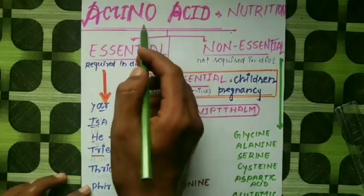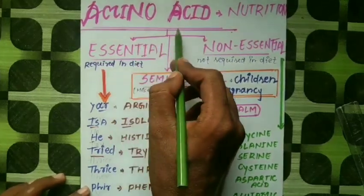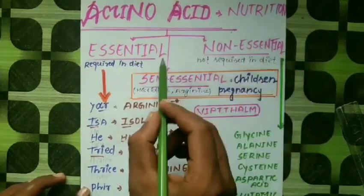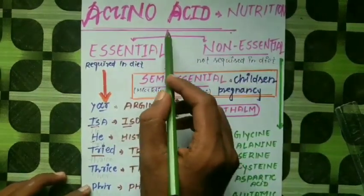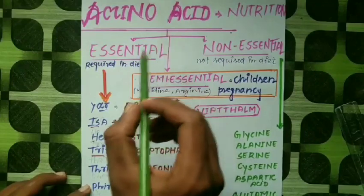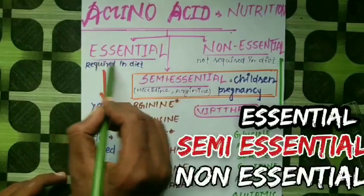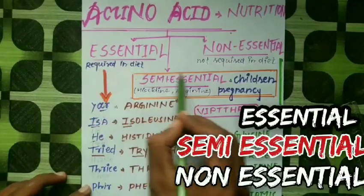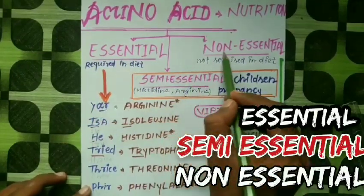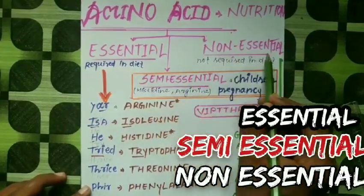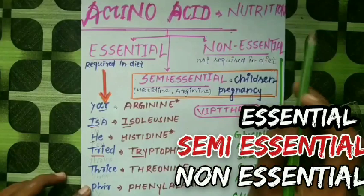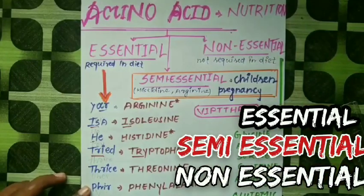So first of all, amino acid classification based on nutrition. Amino acid is classified into essential, semi-essential, and non-essential amino acid.